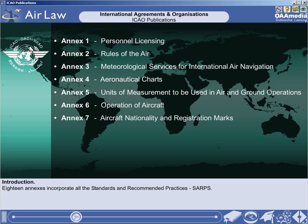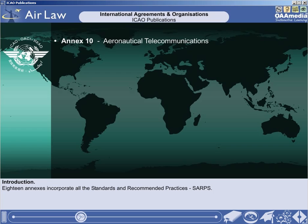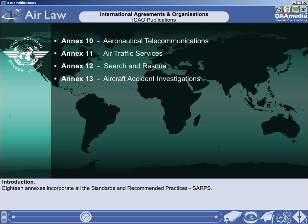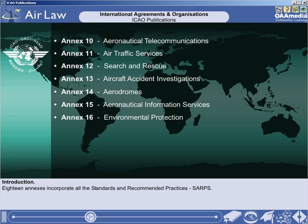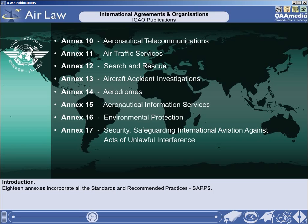Annex 6 – Operation of Aircraft, Annex 7 – Aircraft Nationality and Registration Marks, Annex 8 – Airworthiness of Aircraft, Annex 9 – Facilitation, Annex 10 – Aeronautical Telecommunications, Annex 11 – Air Traffic Services, Annex 12 – Search and Rescue, Annex 13 – Aircraft Accident Investigations, Annex 14 – Aerodromes, Annex 15 – Aeronautical Information Services, Annex 16 – Environmental Protection, Annex 17 – Security: Safeguarding International Aviation Against Acts of Unlawful Interference, Annex 18 – The Safe Transport of Dangerous Goods by Air.